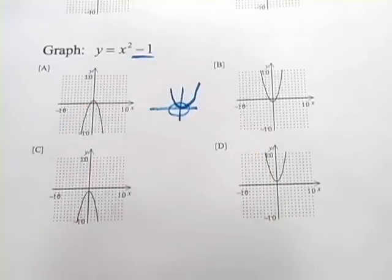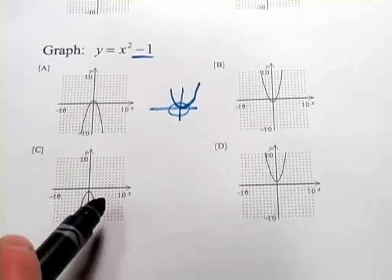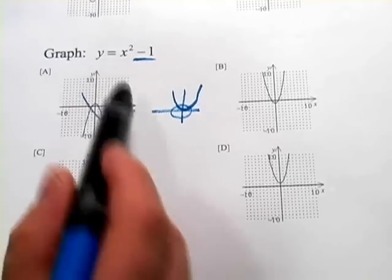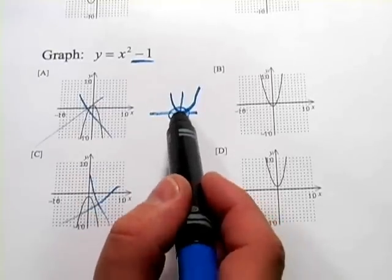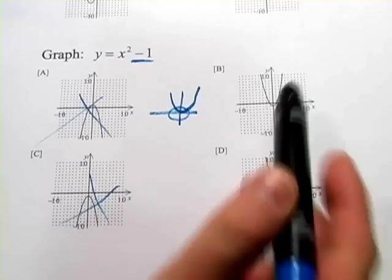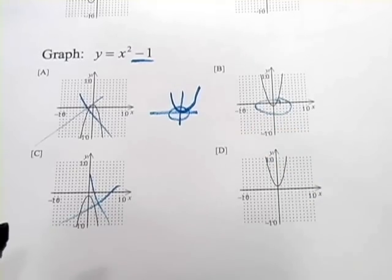What this negative 1 does is just move that down one. So we're going to look for an upward opening parabola. So these are out, whose vertex is at 0, negative 1. And there we have it. So that's B.